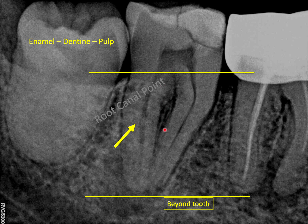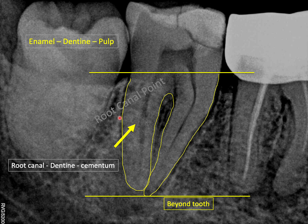For the root, I do the opposite — I start from inside and travel outward. I begin by tracing the root canal from the pulp chamber all the way to the tip of the root. Once the root canal is traced, I look at the dentine, then the cementum. So for the root, we move from inside outward, whereas for the crown we move from outside inward.